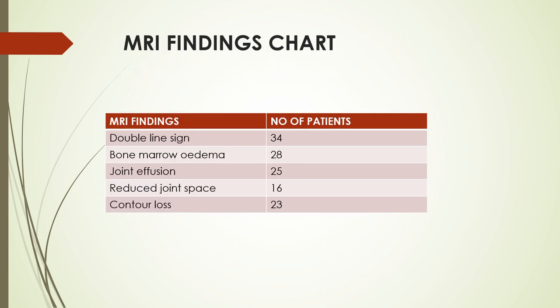MRI findings were: double line sign in 34 patients, bone marrow edema in 28, joint effusion in 25, reduced joint space in 16, and loss of contour in 23. Double line sign was the most common finding.